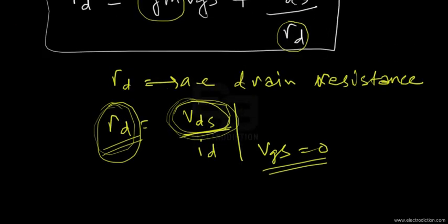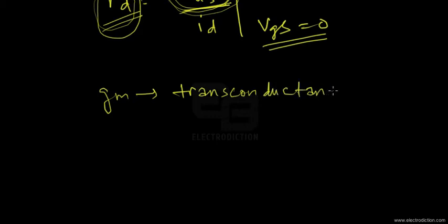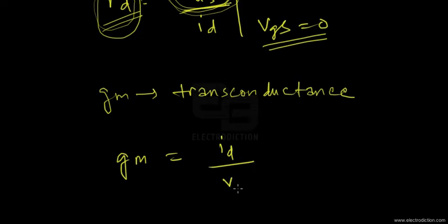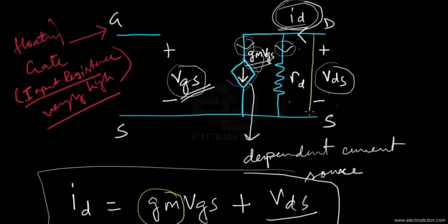The other term is G_M, which is the transconductance. Transconductance links the input to the output parameters. G_M equals the output drain current ID with respect to variations in V_GS — the input AC signal — and this is taken when V_DS equals zero, which means the output terminals are shorted.